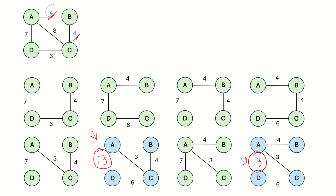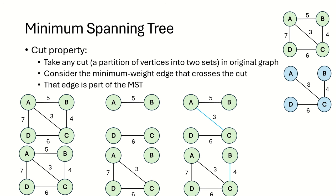When weights are not distinct, the MST is not unique and you can have multiple minimum spanning trees. There is a property known as the cut property in a minimum spanning tree. It states: take any cut — meaning you partition the vertices into two sets in the original graph. For example, this graph can be cut so that vertices A and B form one set and vertices C and D form another set.